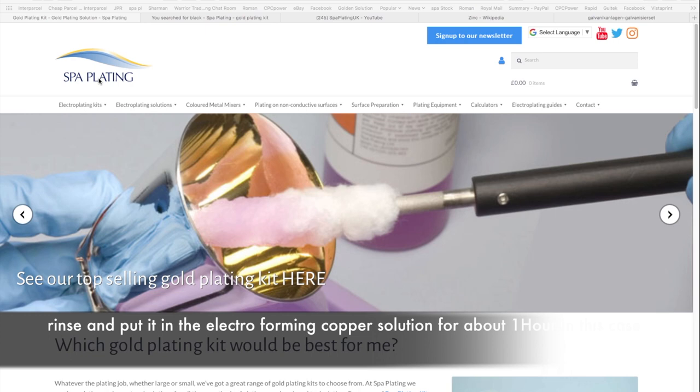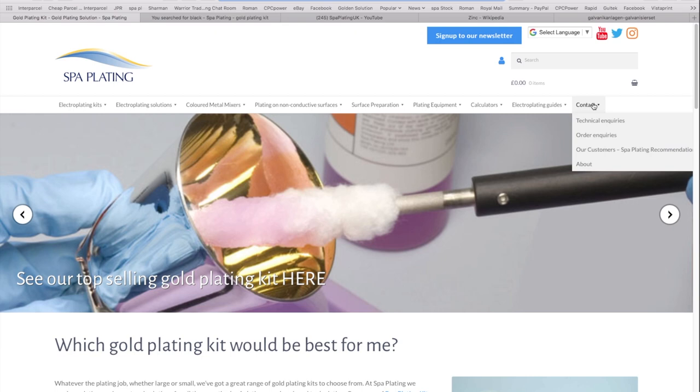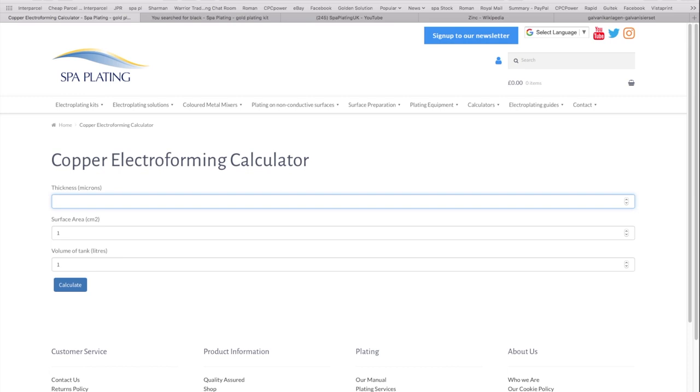We have an online calculator which shows you the settings. First of all, you go on the SPA plating website, info at GoldenCo.UK, or Google SPA plating. Top right you see calculator, then you go on the copper electro forming calculator.